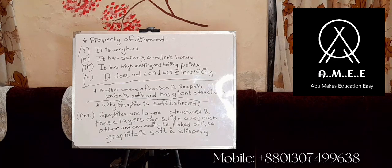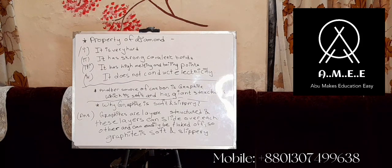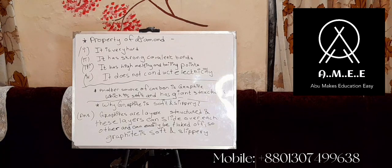Now comes the question: why is graphite soft and slippery while diamond is not? Graphite is soft and slippery because graphite has a layer structure.